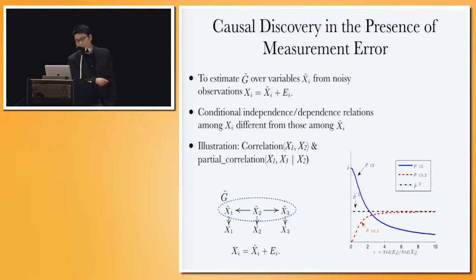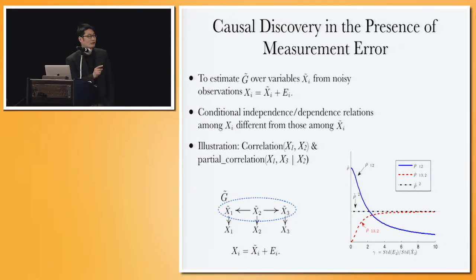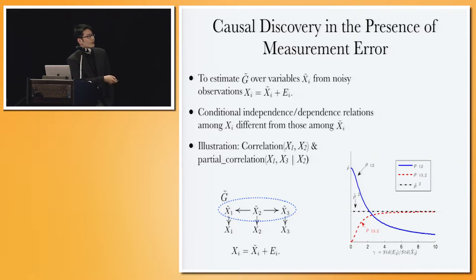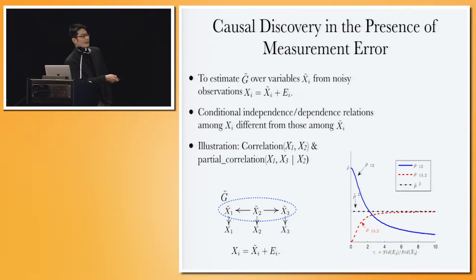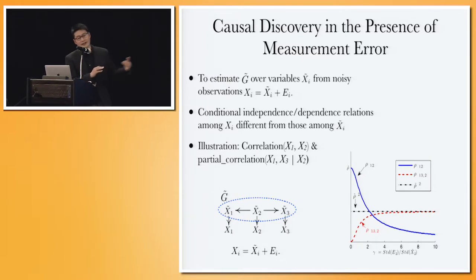The red line shows the partial correlation between x1 and x3 given x2. Ideally this should be zero, since in the true causal graph there is no association between them when you fix x2. However, because of measurement error, when you increase the level of measurement error in the variables, the partial correlation between x1 and x3 will increase to some constant. Because of measurement error, originally independent pairs become dependent. Similarly, the dependence between x1 and x2 will become weaker as you increase measurement error. That's why if you apply conditional independence-based methods, you get many extra edges and many missing edges.